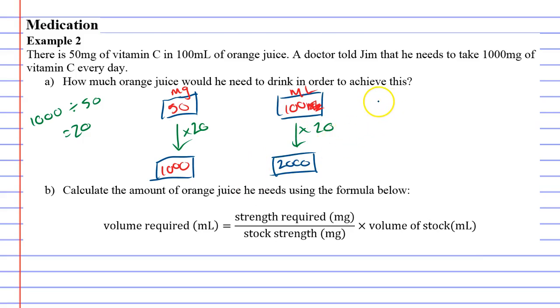Which means to get 1000 milligrams of vitamin C, we need to drink 2000 milliliters, or two liters, because that's two liters of orange juice. So we've worked that out.